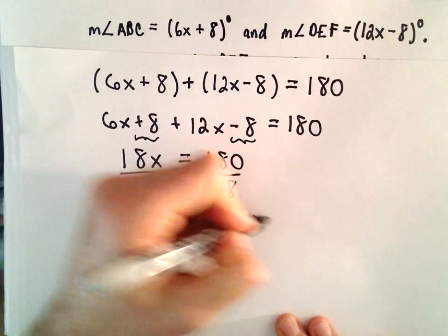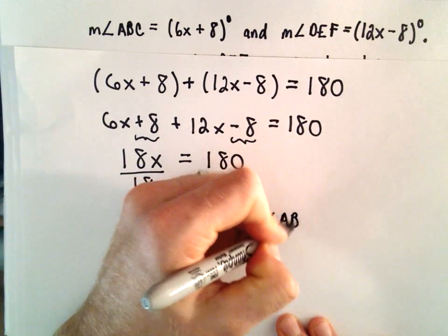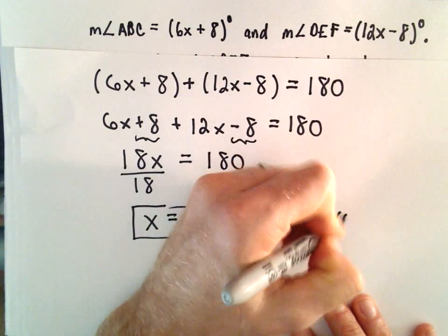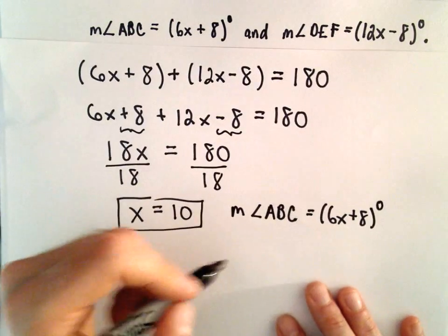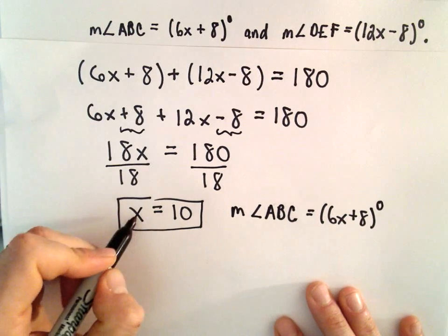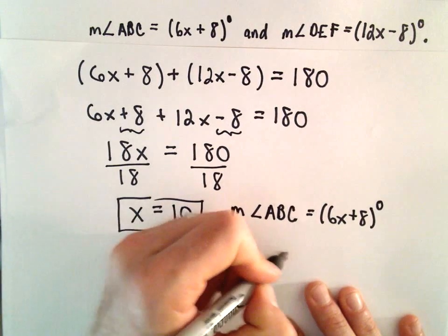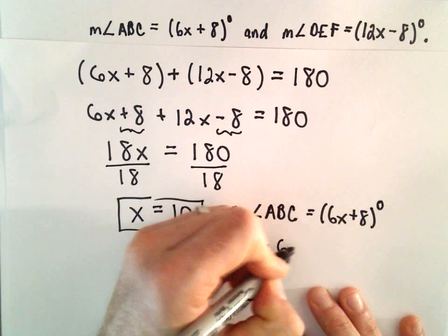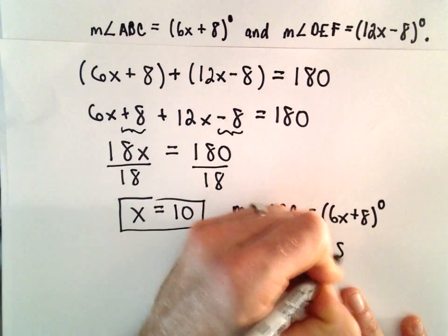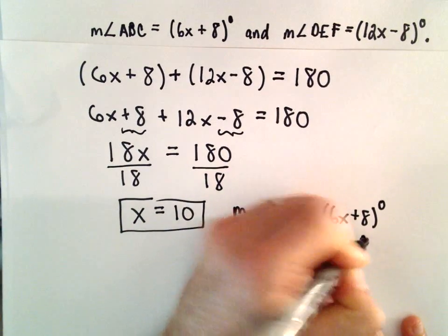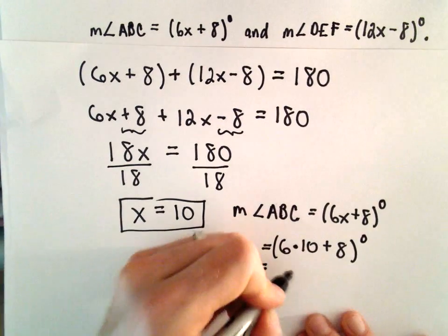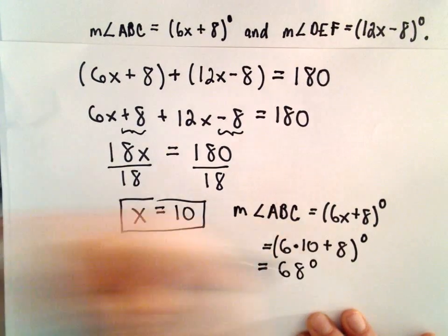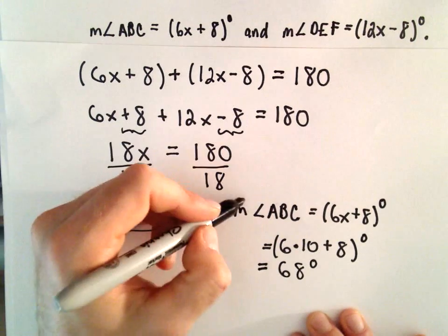We were told that the measure of angle ABC was equal to 6x plus 8 degrees. So if we substitute in the fact that x equals 10, that'll give us 6 times 10 plus 8 degrees. Well, 6 times 10 will be 60 plus 8. That'll give us 68 degrees for the measure of angle ABC.